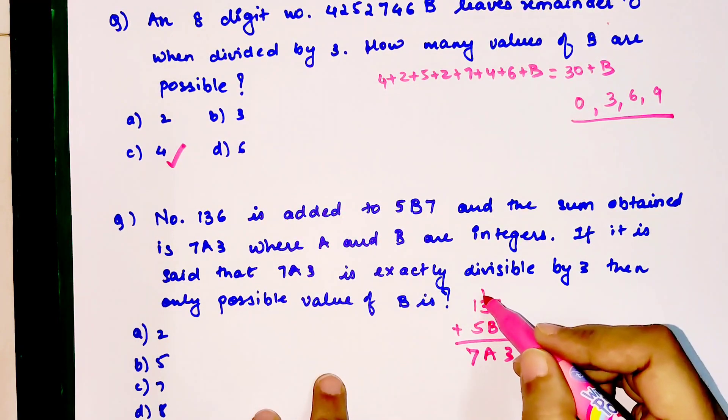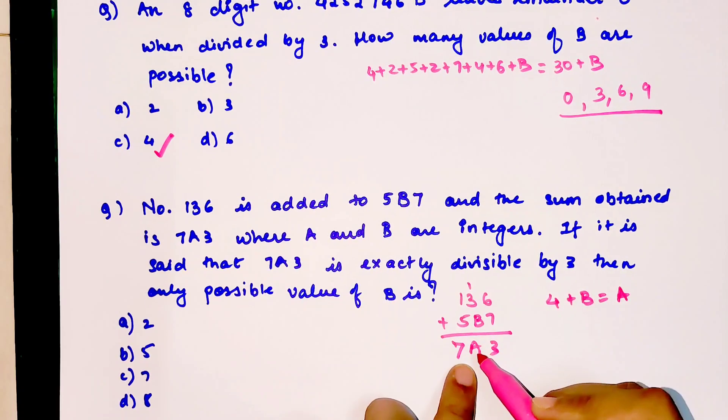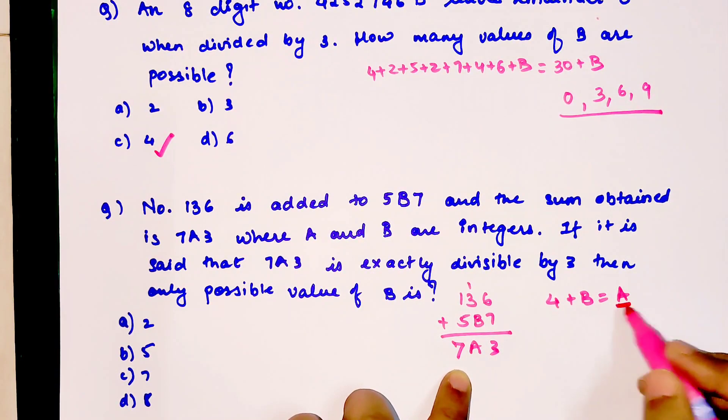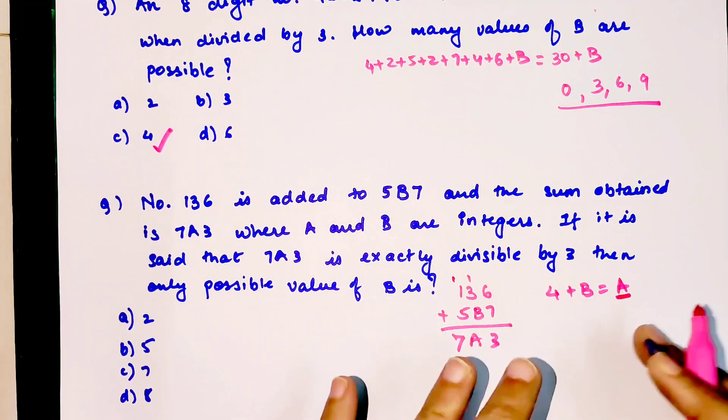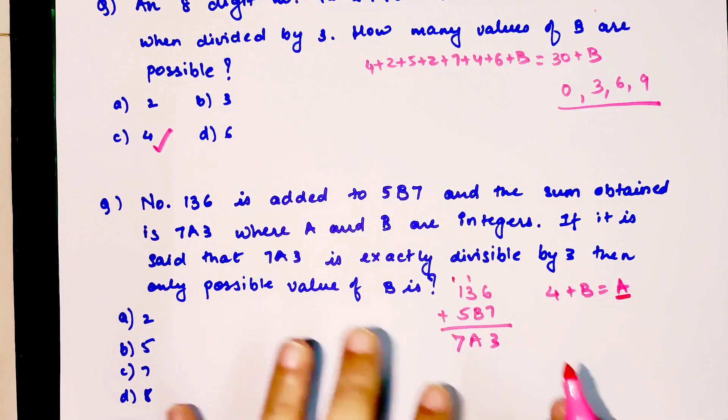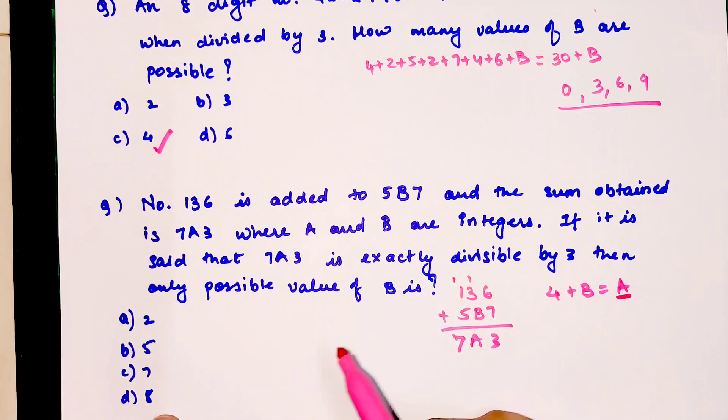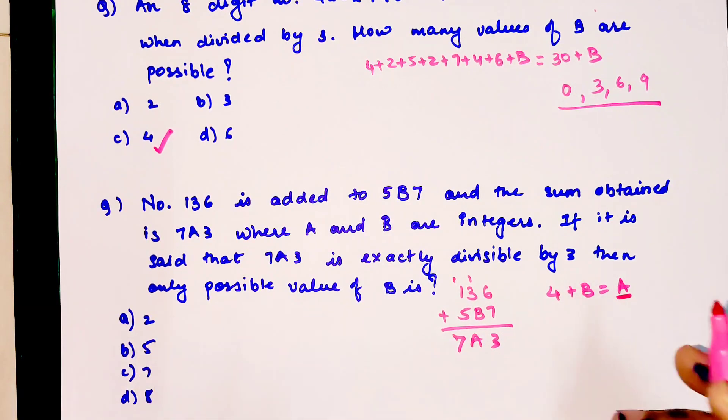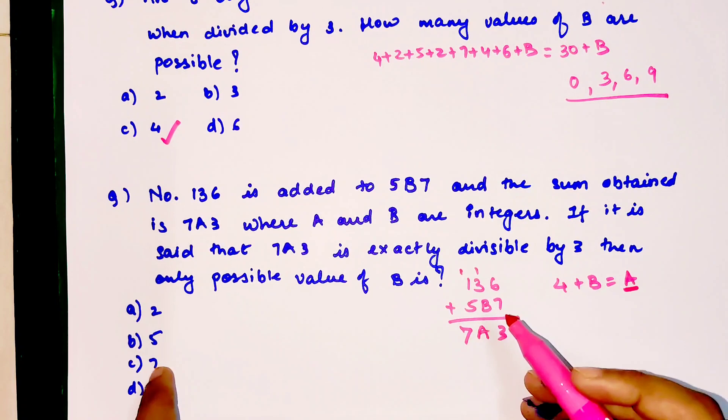We have 6 plus 7 which is 13, and you add 1 over here, so 3 plus 1 is 4. So 4 plus B gets you an A. Now understand, you have 1 plus 5 which is 6, but the answer is 7. So this number will be in two-digit form, and that 1 will get carried over to get you a 7. You need to remember this or you won't be able to solve this question.